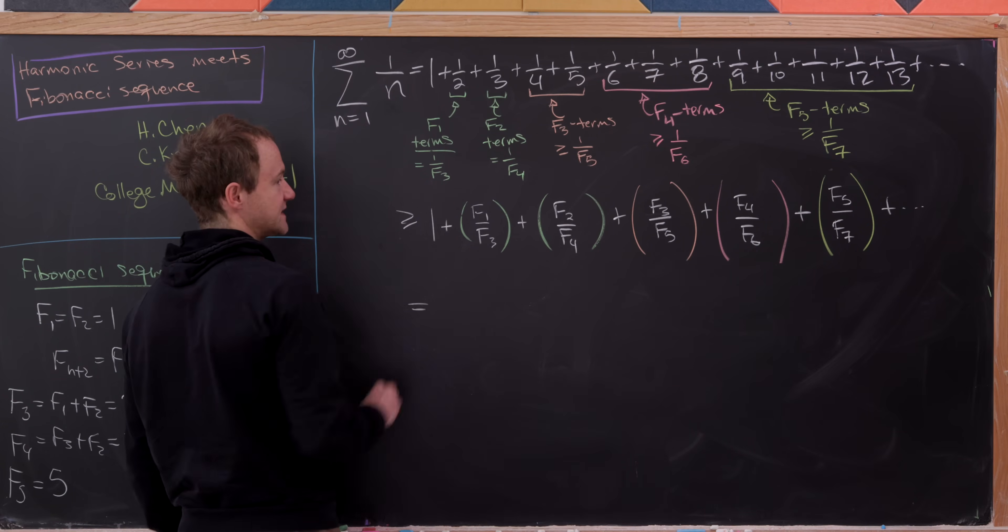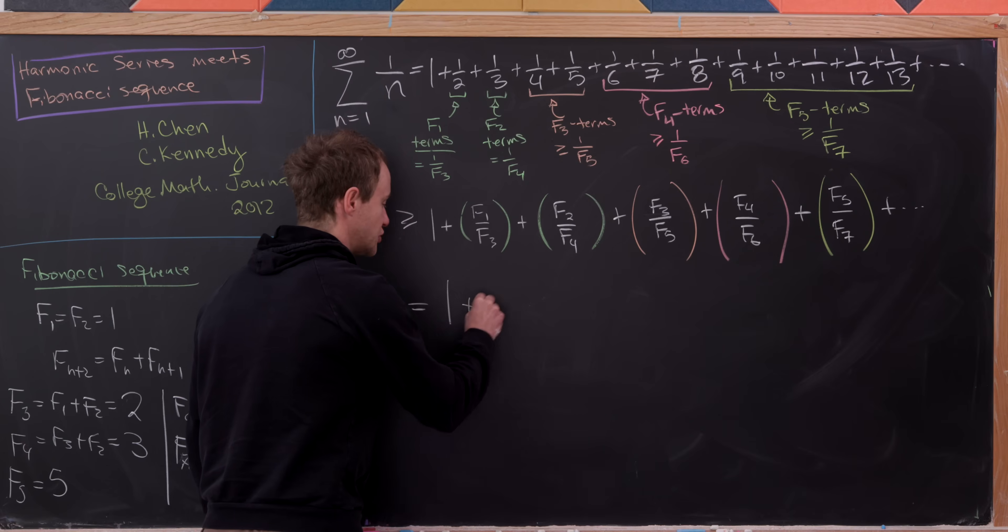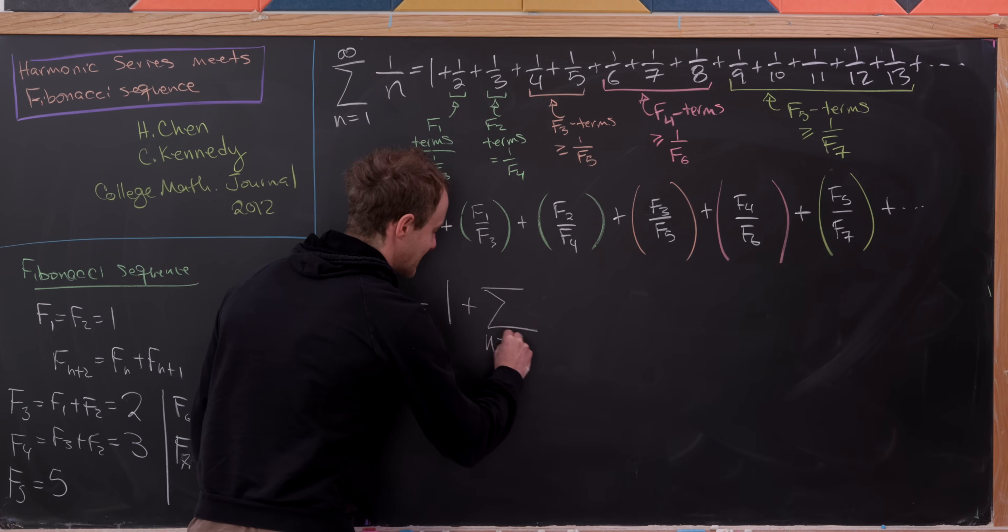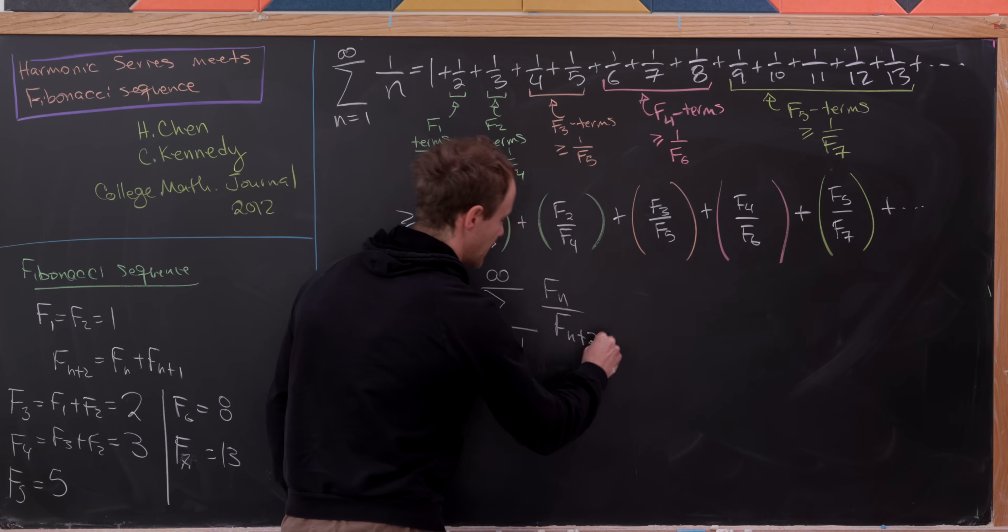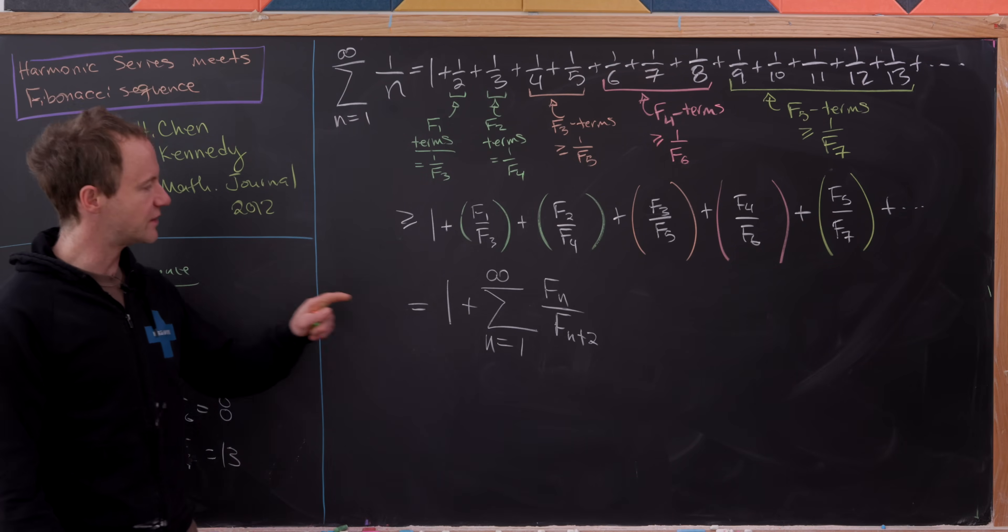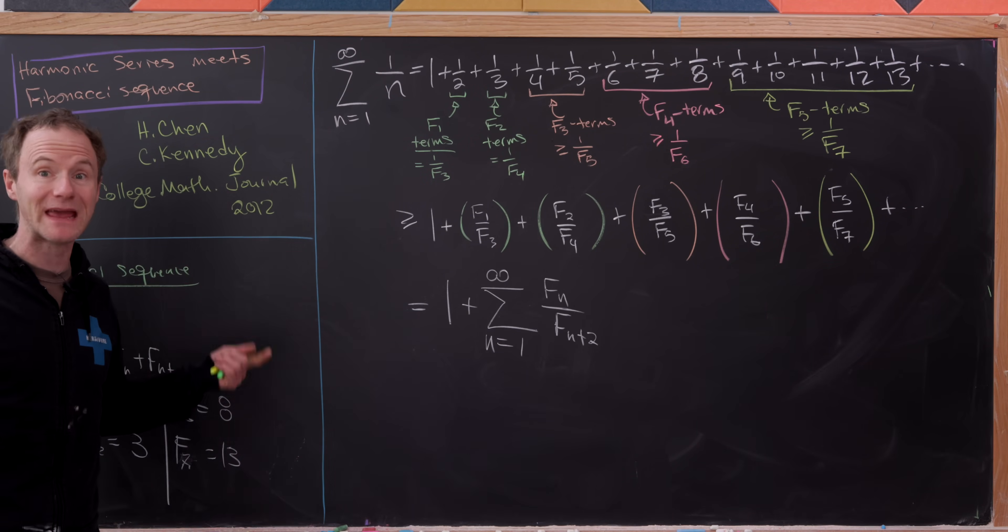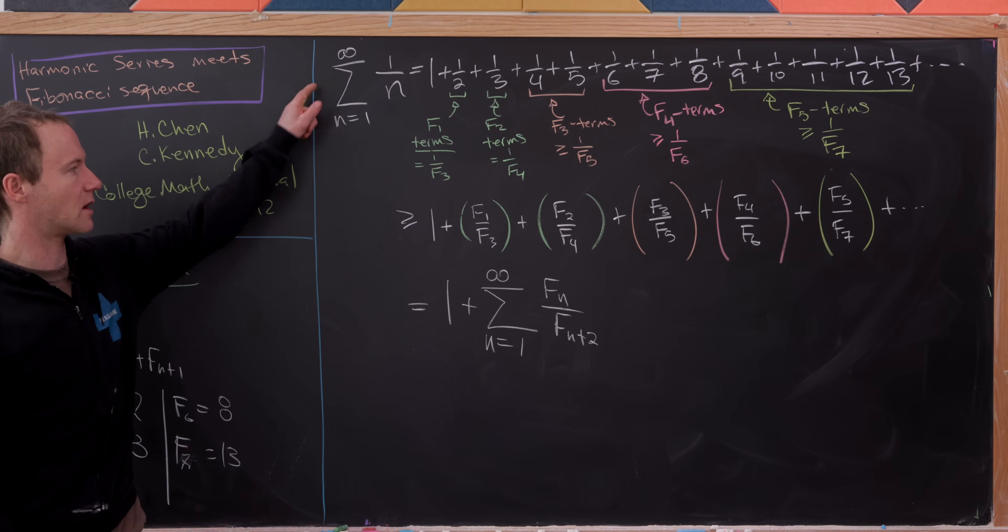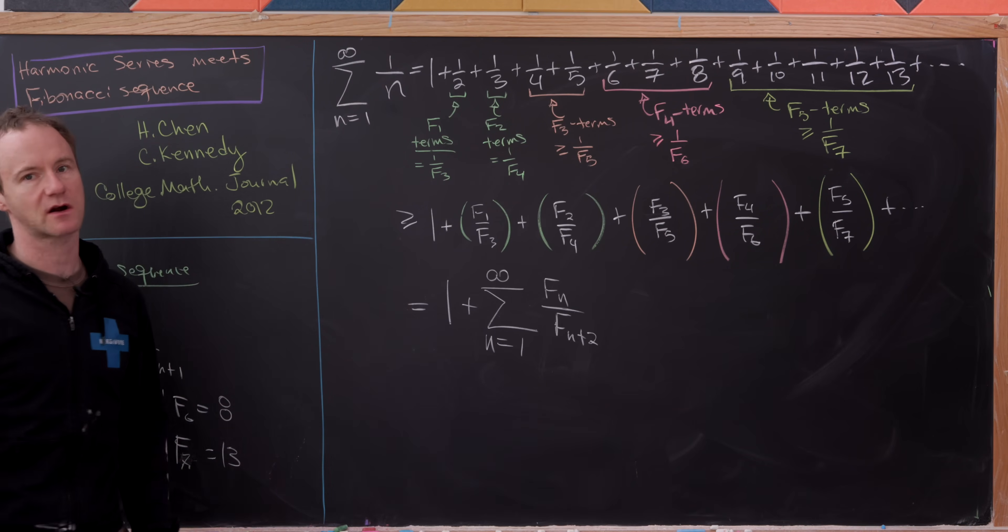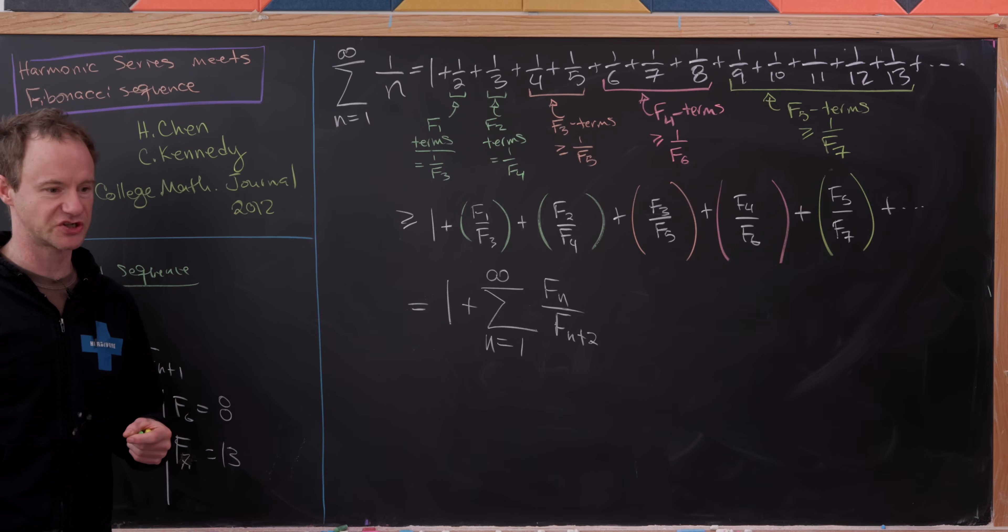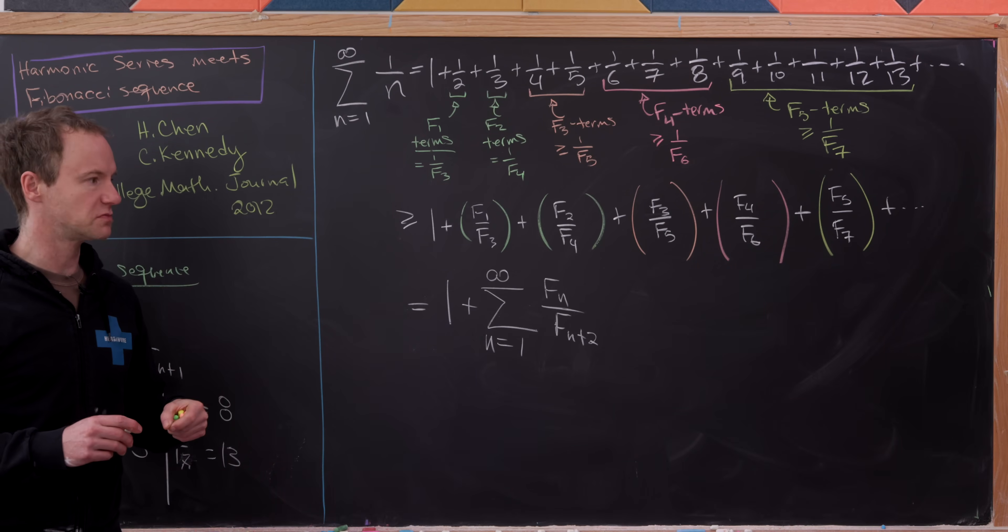So this series that we have written on this line is exactly equal to 1 plus the sum as n goes from 1 to infinity of F sub n over F sub n plus 2. But now what we'll need to do is show that this series, this companion series diverges. But our harmonic series is bigger than or equal to this companion series. So if this diverges, so does our harmonic series. Now there's a quick way out of this where you look at the well known limit of consecutive Fibonacci numbers. But that's not exactly what we're going to use here because I want to keep this very self contained.